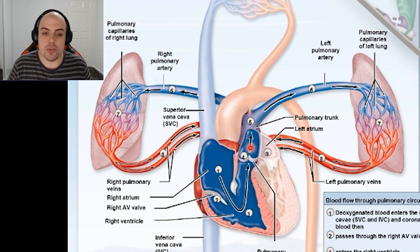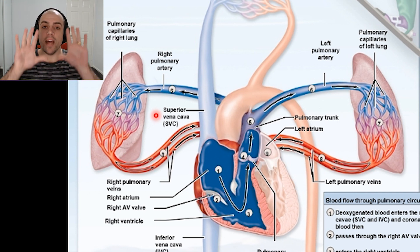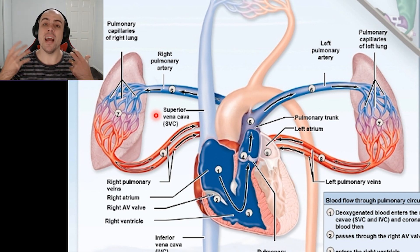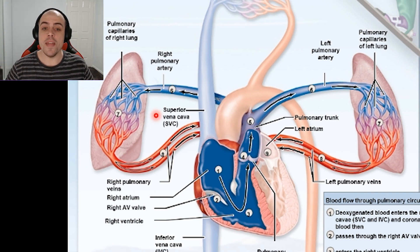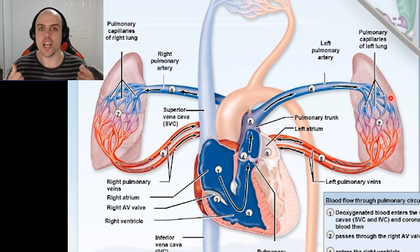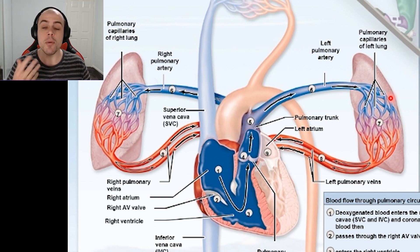As it leaves the pulmonary trunk and goes down the left and right pulmonary arteries, those arteries will start to get smaller and smaller, going down to our pulmonary arterioles, and then finally to the pulmonary capillaries of the lungs. It's in these capillaries that we're going to see gas exchange — this is where CO2 is removed from the blood and oxygen is put into the blood. We'll be talking about that when we cover the lungs.